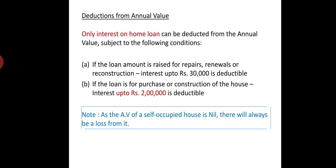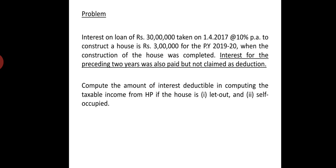Second condition: if it is specifically given that the loan is raised for repairs or renewals, then only an amount equal to Rs. 30,000 is deductible. Since the annual value is nil, we deduct the interest on home loan, resulting in a loss from self-occupied house.